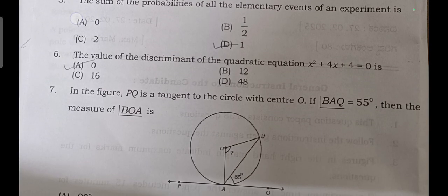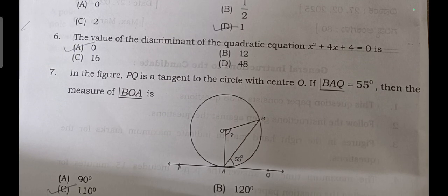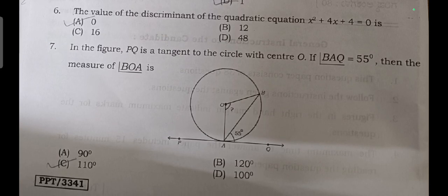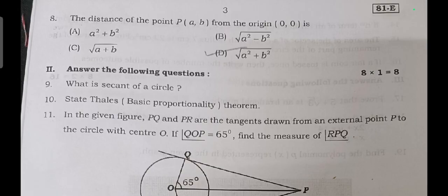In the given figure, PQ is the tangent to a circle with center O. If angle BAQ = 55°, then the measure of angle BOA is answer: 110°. Distance between the points P(a,b) from the origin (0,0) is √(a² + b²).